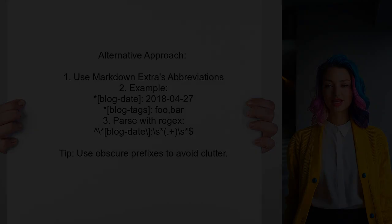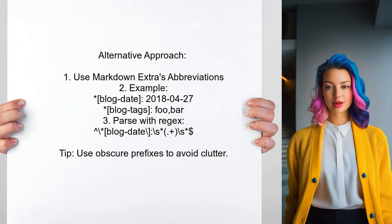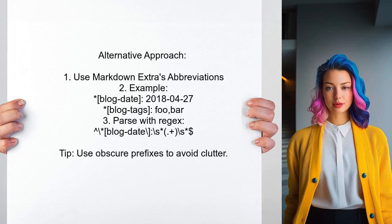Another user shares an alternative approach using the abbreviations feature from Markdown Extra. This method allows you to include metadata like publication date and tags without cluttering your files.